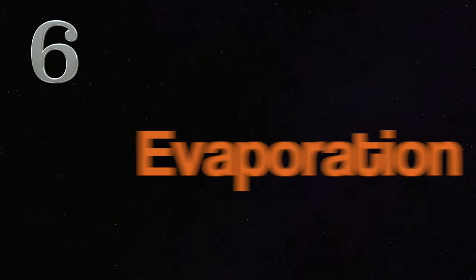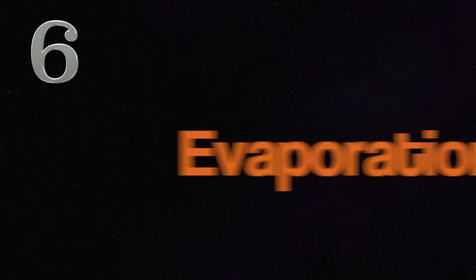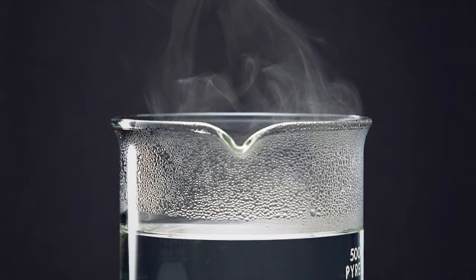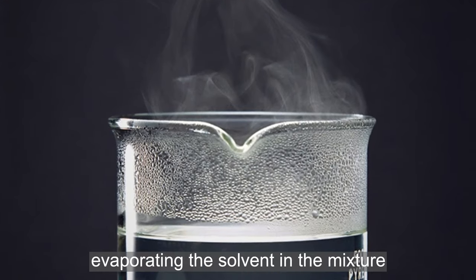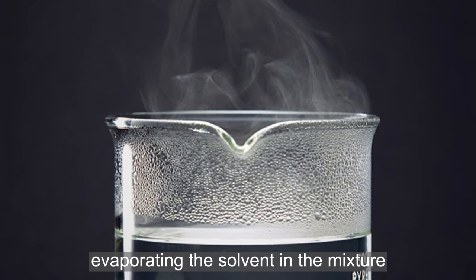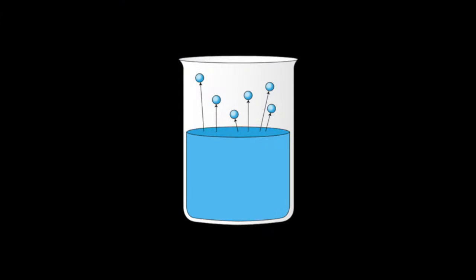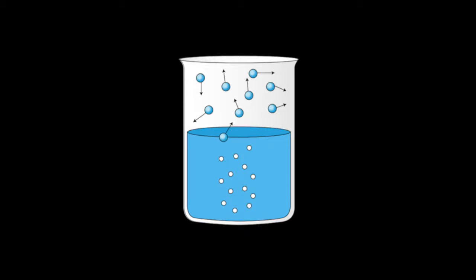Number 6. Evaporation. Evaporation is a separation method that involves evaporating the solvent in the mixture. In this method, the solution is heated until the organic solvent evaporates where it turns into gas and mostly leaves behind the solid residue. Once the liquid is completely evaporated, the solid is all that is left behind.